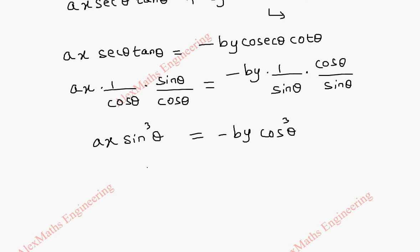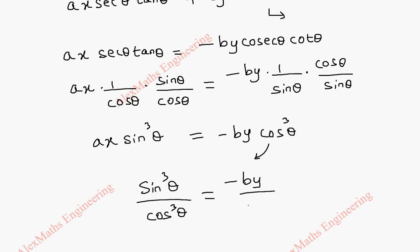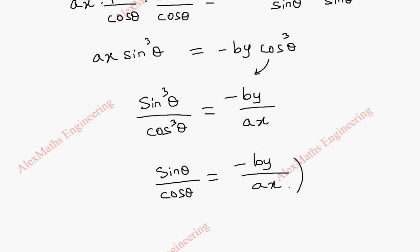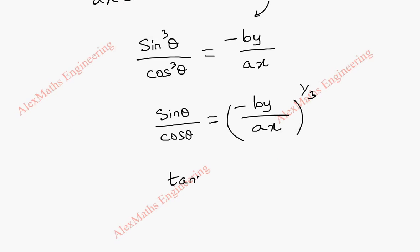From this, we carry the term to the other side. So sin cube theta by cos cube theta gives minus by by Ax. This becomes sin theta by cos theta equal to minus by by Ax whole power 1 by 3, which can also be written as tan theta equal to minus by by Ax whole power 1 by 3.